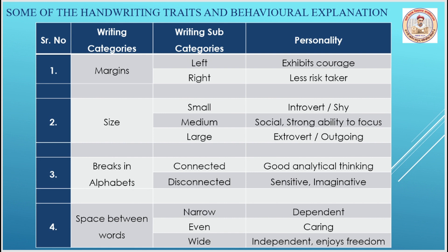Some handwriting traits include margins. If there is a lot of space left on the left side of the margin, that exhibits courage; if space is on the right side, then that person is a less risk-taker. If the size of the handwriting is too small, then the person is introvert; if it is very large, then the person is extrovert and outgoing.